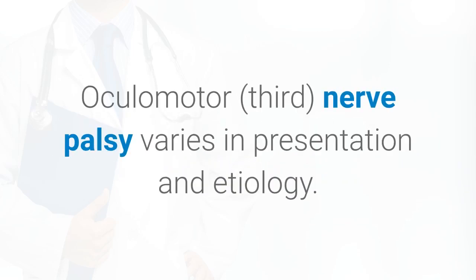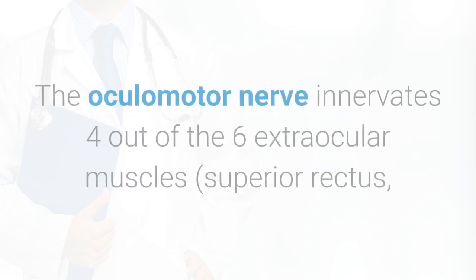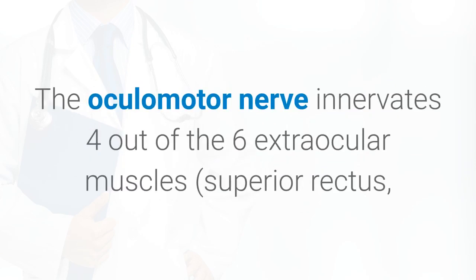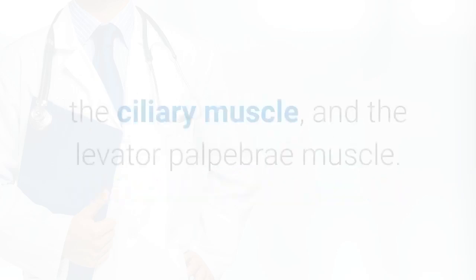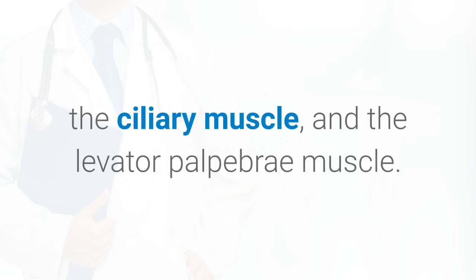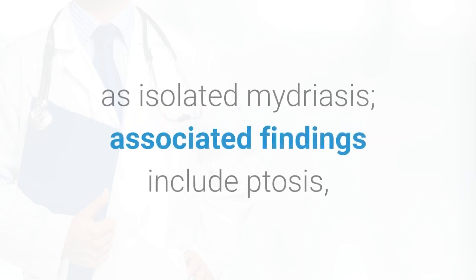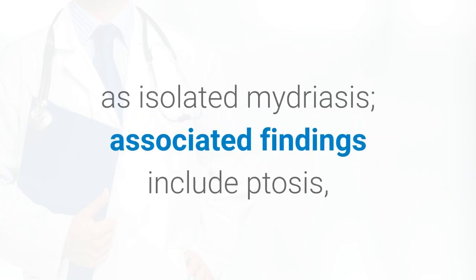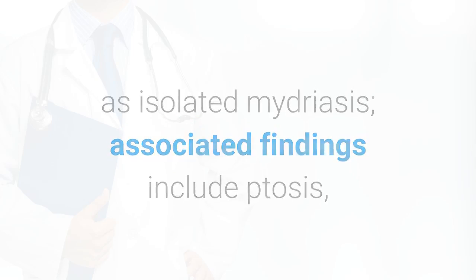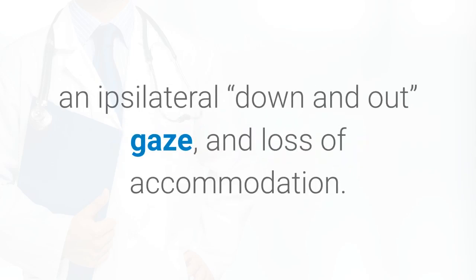Oculomotor third nerve palsy varies in presentation and etiology. The oculomotor nerve innervates four of the six extraocular muscles — superior rectus, medial rectus, inferior rectus, and inferior oblique — as well as the sphincter pupillae muscle, ciliary muscle, and levator palpebrae muscle. Third nerve palsies rarely present as isolated mydriasis; associated findings include ptosis, an ipsilateral down-and-out gaze, and loss of accommodation.